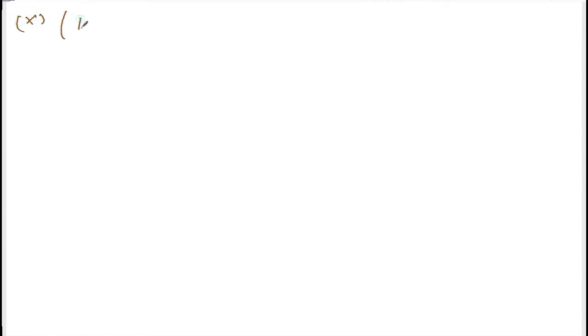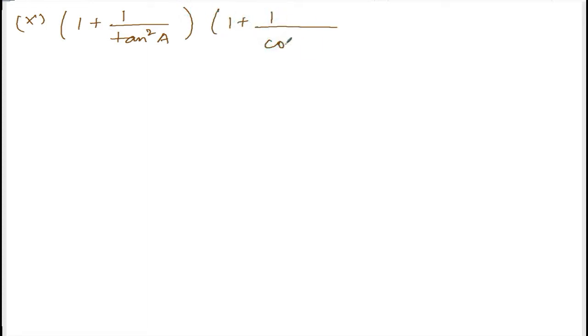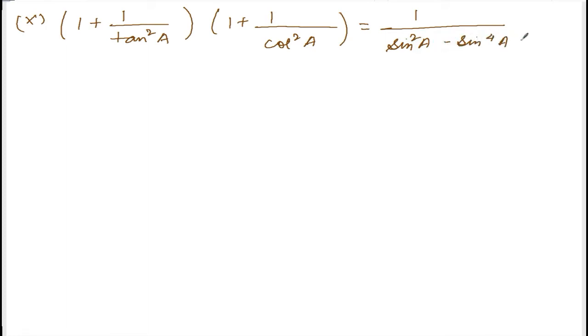We are doing exercise 10.2, question number 11, Roman number 10. The question is: 1 plus 1 divided by tan squared a, into 1 plus 1 divided by cot squared a, which is equal to 1 divided by sin squared a minus sin to the power 4a.